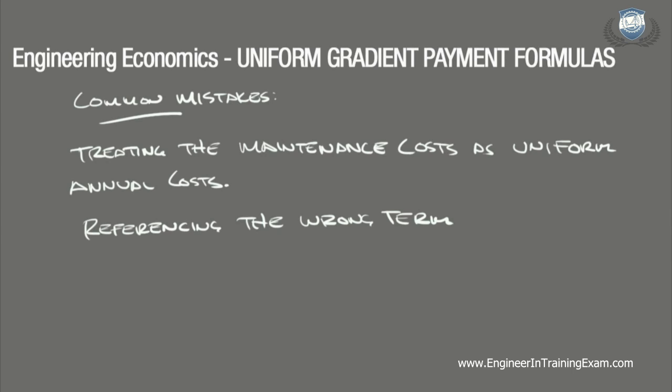As we move into more complex scenarios, we will often be referring to multiple terms at once. In this problem, you may use the correct table and correct N value but reference A/G instead of P/G — a simple but impactful mistake. It is also very easy to reference a table for the wrong interest rate, so remember that the interest rate is always shown at the top of the table. This problem specifically references a 10% interest rate.